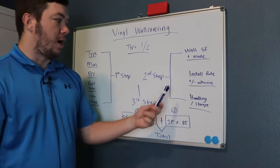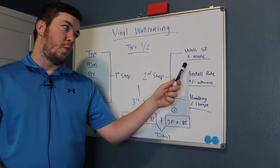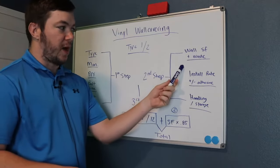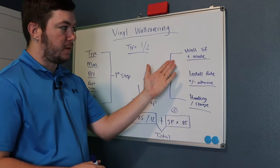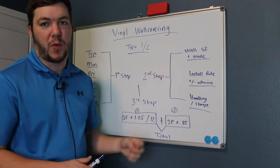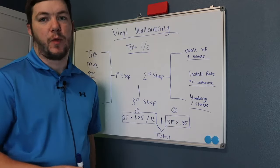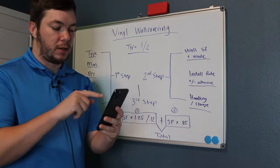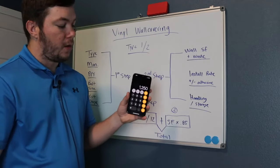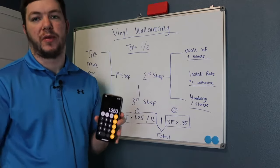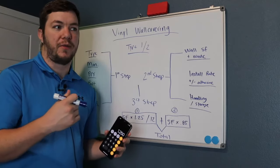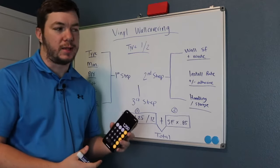Once you've figured out all that, we're going to move to step two. You need to know what walls it's going on and the square footage that the pattern is going on. So if you have a thousand square feet of walls that this wall covering is going to, you need to know that. Then you need to figure out what you want to add for waste. We always added 25% for waste. So if I have a thousand square feet, I multiply that by 1.25 — now I have 1,250 square feet that I need to calculate wall covering for.